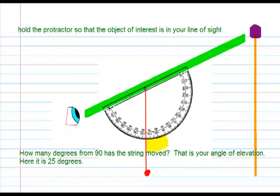Next, you would hold the protractor so that the object of interest is in your line of sight. It could be a flying object, it could be the top of a building, whatever. At this point you either hold the string where it is, or you have somebody else see where it's hitting the protractor.